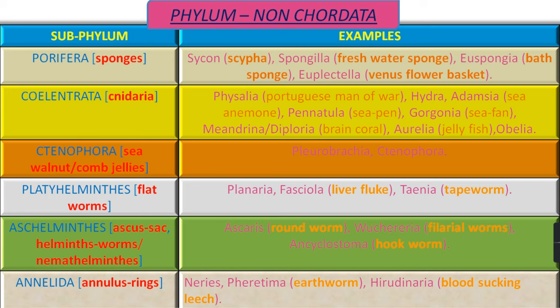The next sub-phylum is Tenophora, which is commonly known as Sea Walnut or Comb Jellies. The examples are Pleurobrachia and Ctenophora.